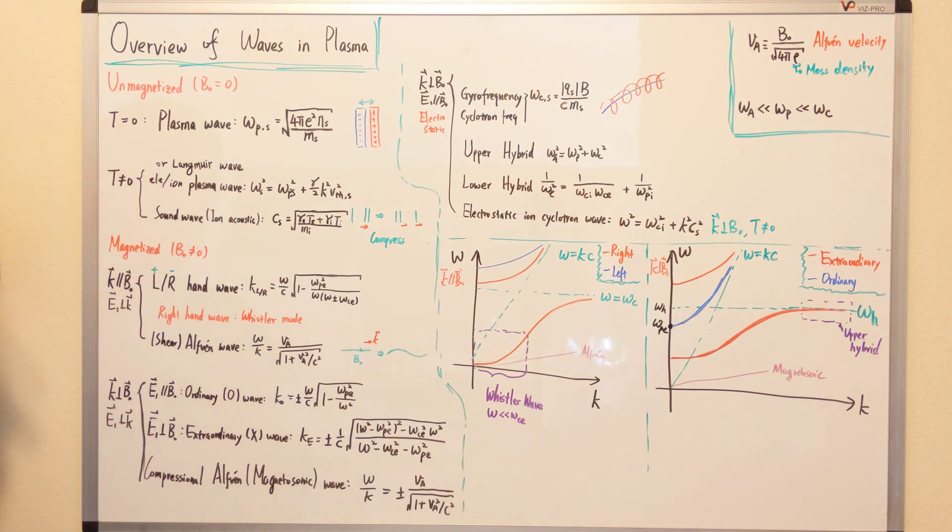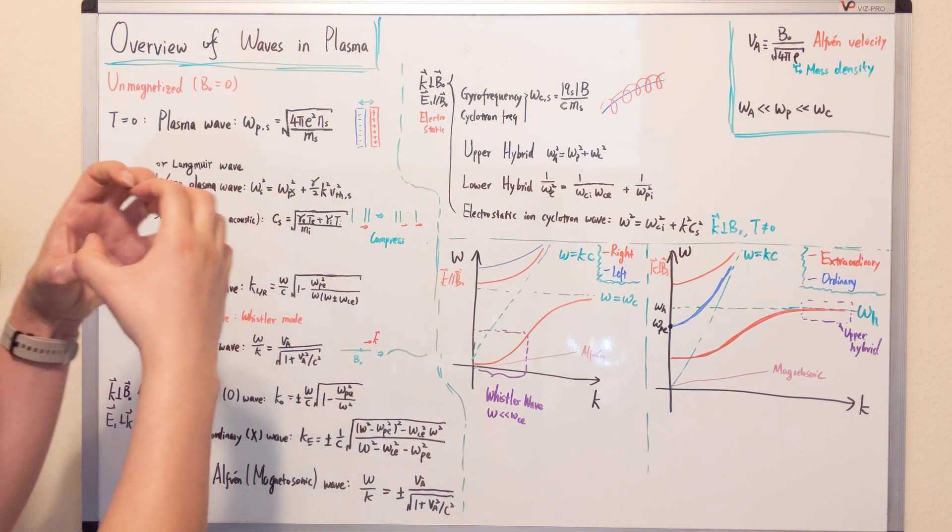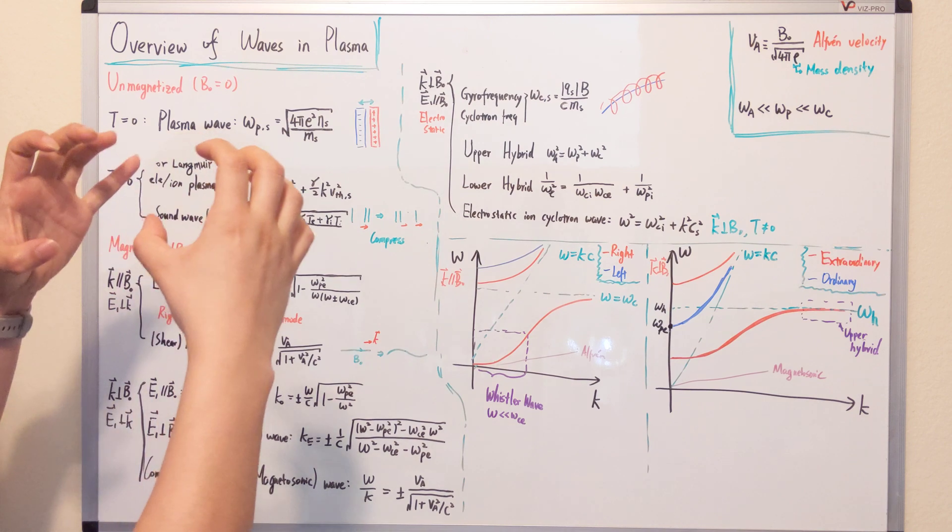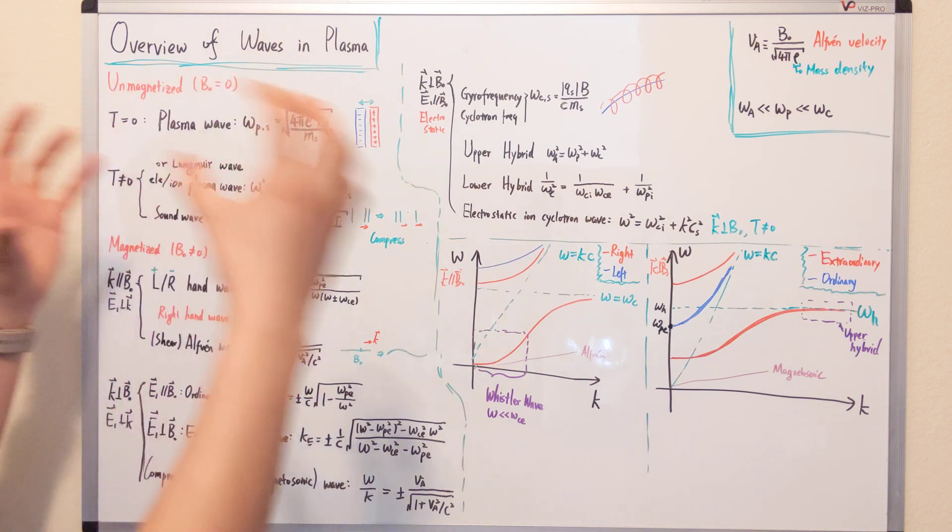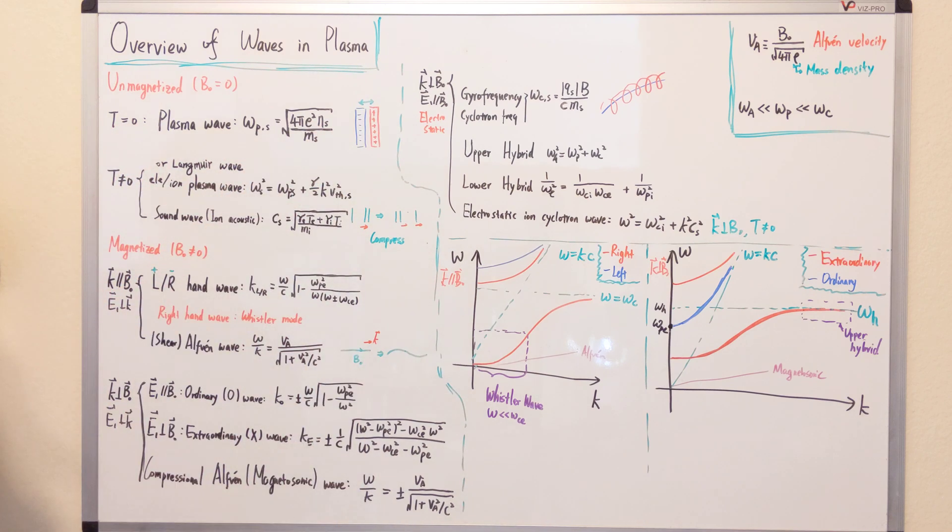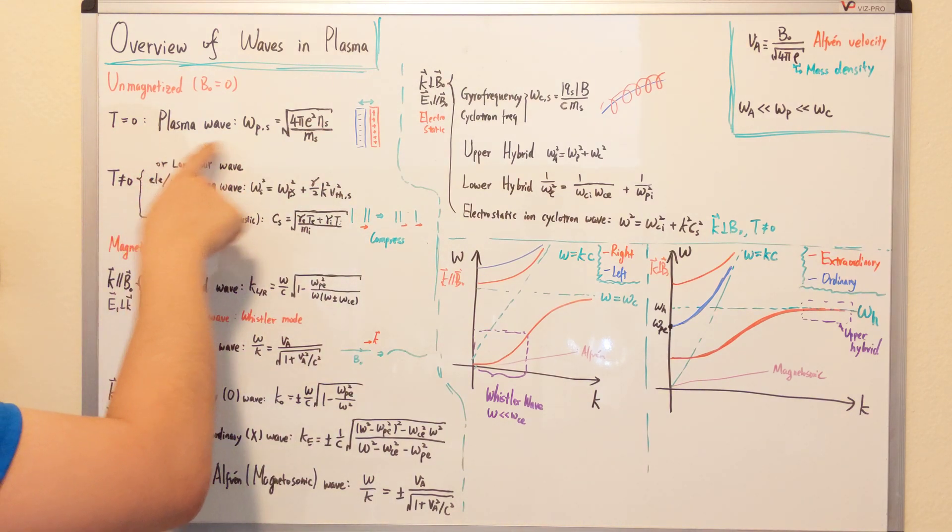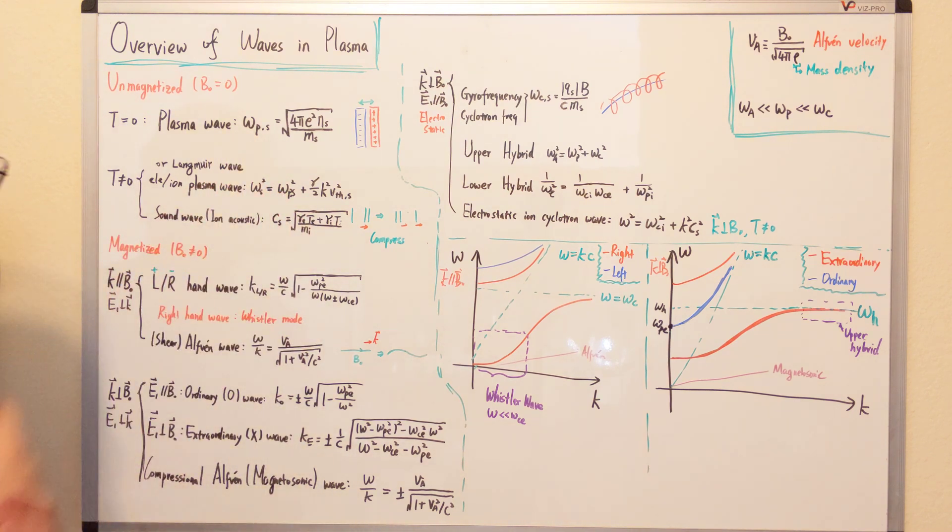For unmagnetized plasma, we have the plasma wave, which is intrinsic frequency of the plasma with certain density. You can think of this like the charge separate in a little bit and then they attract each other and then go back and forth like this. So then this will become the plasma wave.